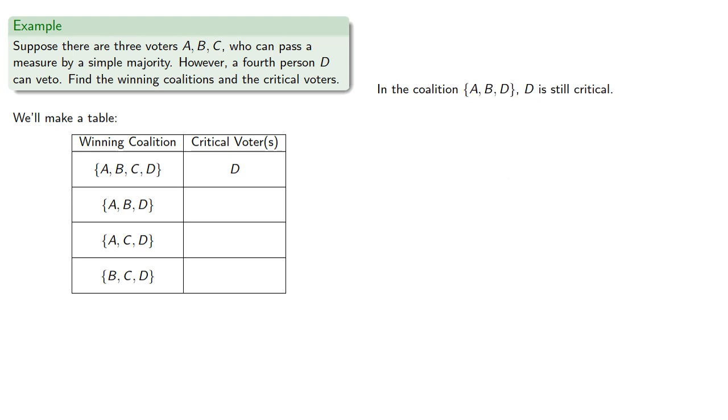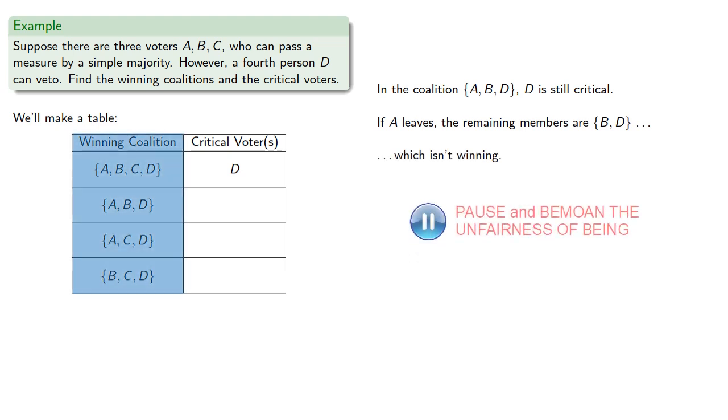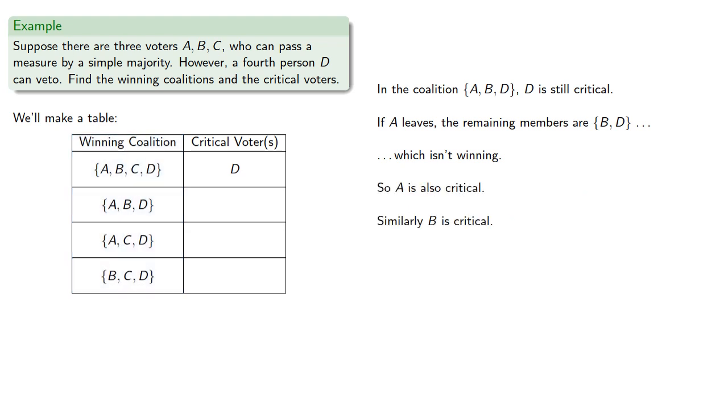In the coalition A, B, and D, D is still critical. If A leaves, the remaining members are B and D, which is not one of our winning coalitions. So A is critical, and the same argument can be made for B.